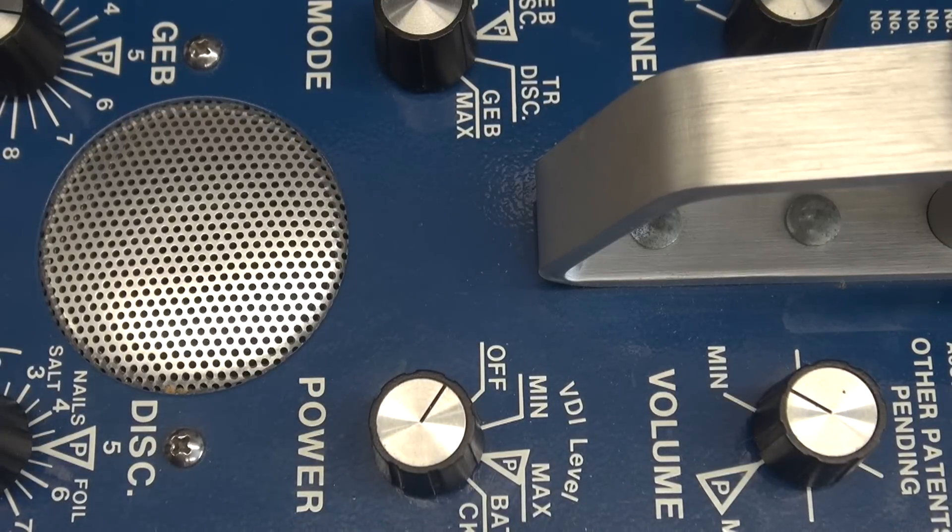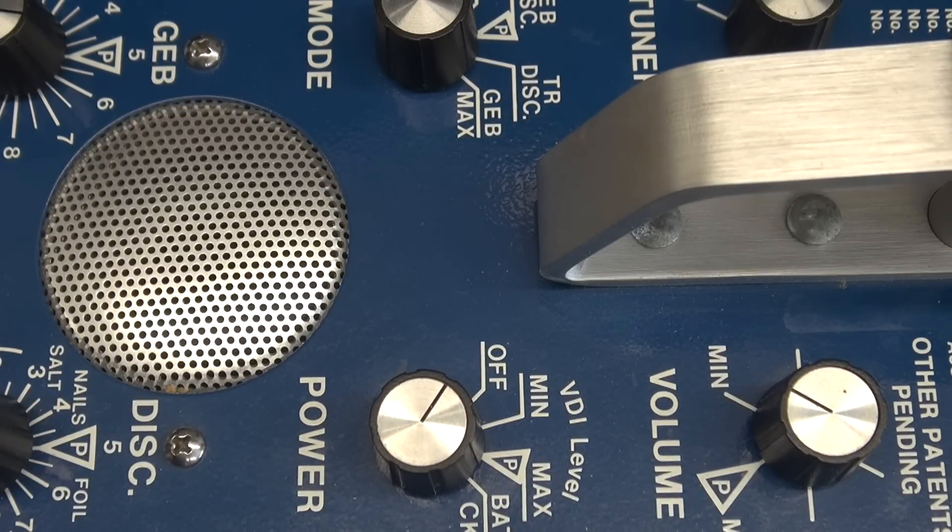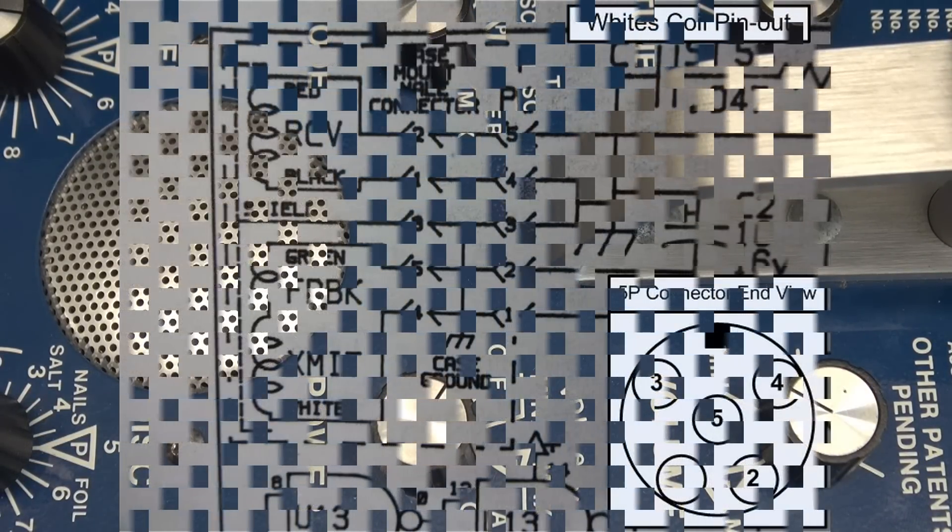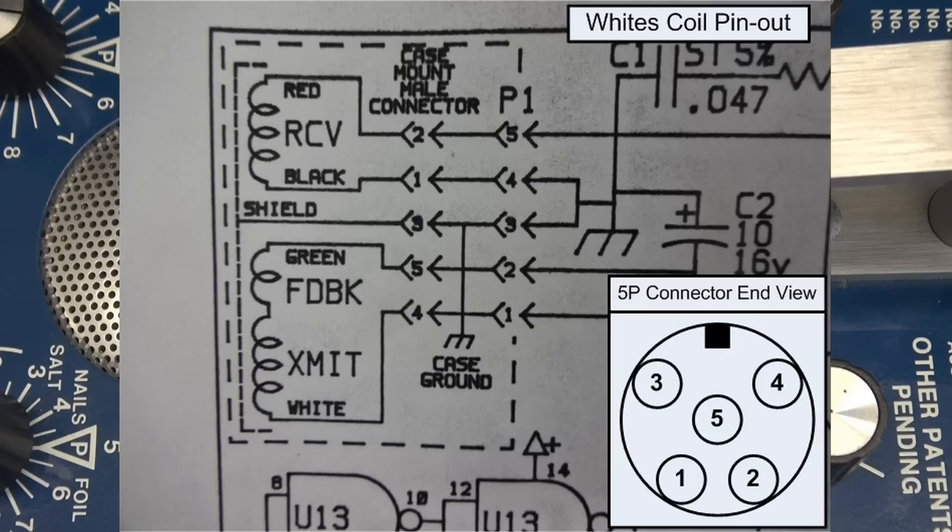So to help you guys out, I took a clip of the actual schematic. This schematic is the same for the 5900, the 6000 series, and all the way to the White's MXT Pro. So I'm guessing that if your detector has the five pin connector P1 that you're seeing over there to the left, that the pinout is the same as the diagram I'm showing you down to the right.